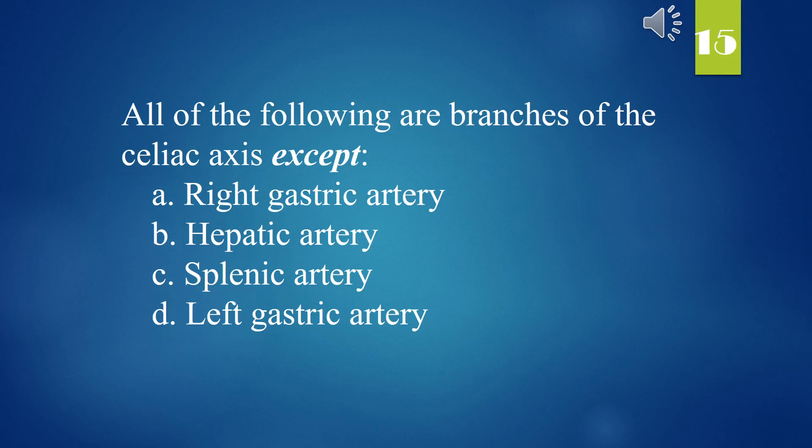All of the following are branches of the celiac axis except: A. Right gastric artery. B. Hepatic artery. C. Splenic artery. D. Left gastric artery. The answer is A. Right gastric artery.